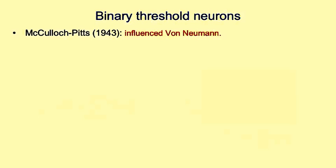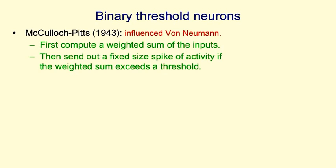Very different from linear neurons are binary threshold neurons that were introduced by McCulloch and Pitts. They actually influenced von Neumann when he was thinking about how to design a universal computer. In a binary threshold neuron, you first compute a weighted sum of the inputs, and then you send out a spike of activity if that weighted sum exceeds the threshold.